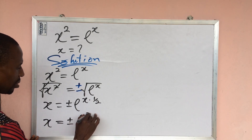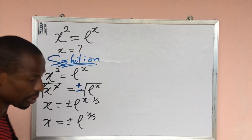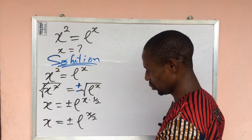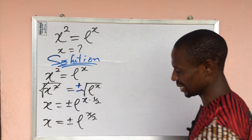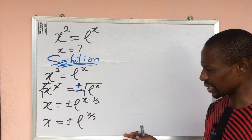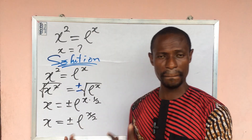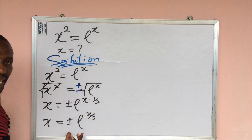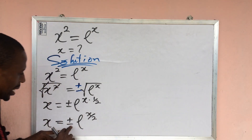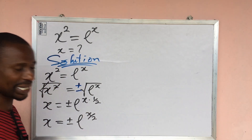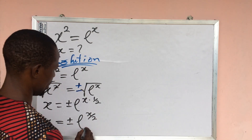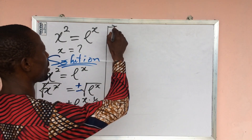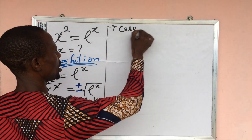If you look at this expression, we have two cases: the positive and the negative. If we solve the positive one first, we get imaginary roots, but the negative will give us a real root. So let's take the negative one as Case 1 and continue from here.